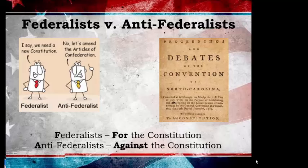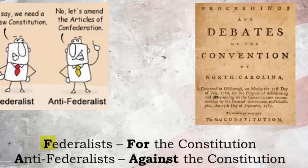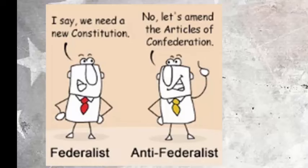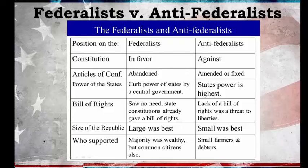This is where those in favor and those against this new document began to organize under their new titles: the Federalists and the Anti-Federalists. An easy way to remember who was for and who was against — Federalist starts with an F, and they were for it. Anti means against, and starts with an A, and they were against it. The Anti-Federalists agreed that the Articles needed fixing or amending, but felt the new document was too much, and they just wanted to stay with the Articles.